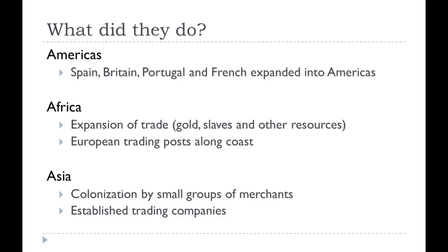In Africa, expansion meant growth of trade in gold, slaves, and other resources. Europeans set up trading posts along the coast — ships would land, unload traded goods, take on slaves and other cargo, and leave. In Asia, colonization was done by small groups of merchants through trading companies like the East India Company. They set up small bases, bought goods from governments, loaded their ships, and returned to their home countries. A lot of gold and silver were exported back to Europe and Asia.